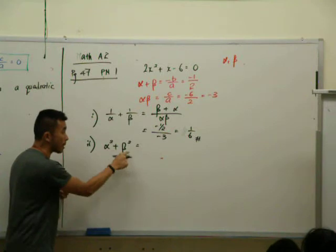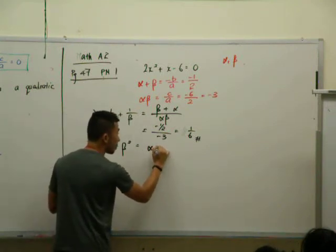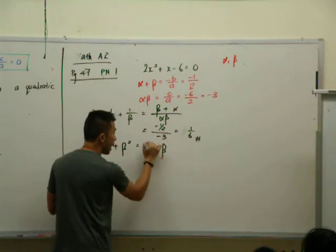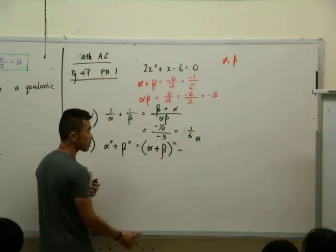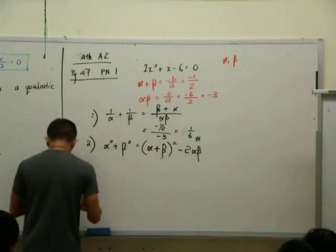If I want to find alpha square plus beta square, what's the formula? Alpha plus beta square minus 2 alpha beta. Okay, this is a very important formula.